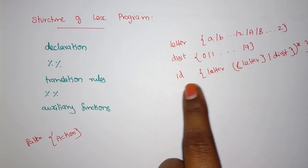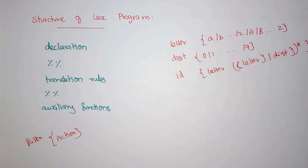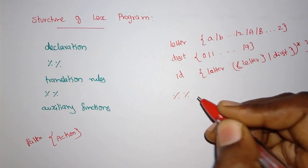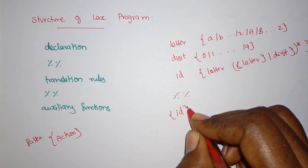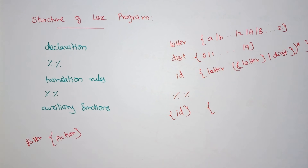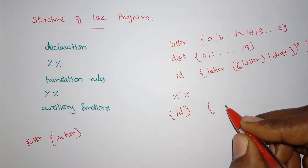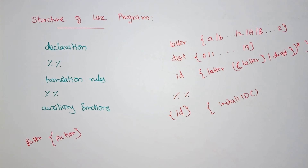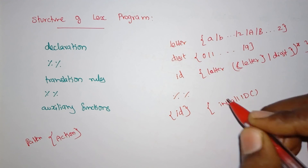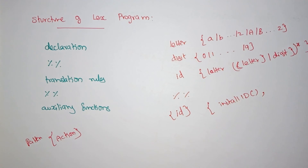This structure in the declaration portion denotes that when this pattern occurs during lexical analysis, it is identified as an identifier. In the translation rule, when an identifier is encountered, the action performed is to install that identifier. We call the function 'install_id', which checks whether the variable is already installed in the symbol table, or if it's a new entry, allocates memory in the symbol table.